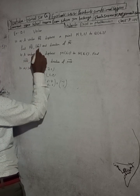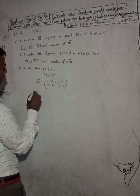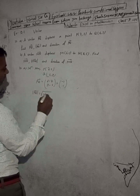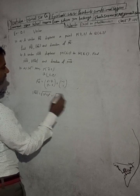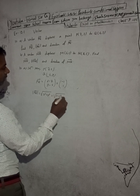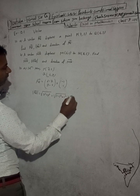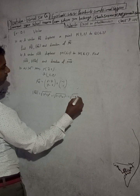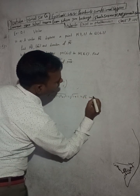Now the magnitude of PQ vector. The modulus or magnitude is equal to the square root of x squared plus y squared. So this is the square root of (minus 1) squared plus (1) squared, which equals the square root of 1 plus 1, giving us root 2 units.